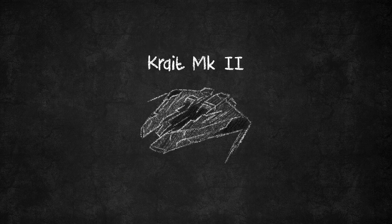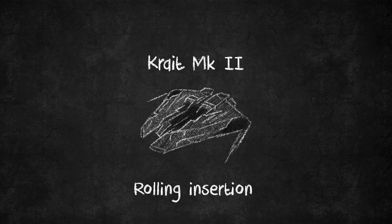Let's move on to the Krait Mk II, another fan favourite because of its greater DPS and flexibility, but a ship that's much harder to fly than the Chieftain and thus more suited to advanced pilots. As with the Chieftain, we'll demonstrate two methods of orbit insertion with the Krait Mk II: the rolling insertion, a less aggressive approach that relies on using roll to overcome the Krait's weak lateral manoeuvrability, and the 1-2 boost insertion, a more aggressive approach that puts you into optimal range faster and lets you deal damage sooner. Let's start with the rolling insertion.